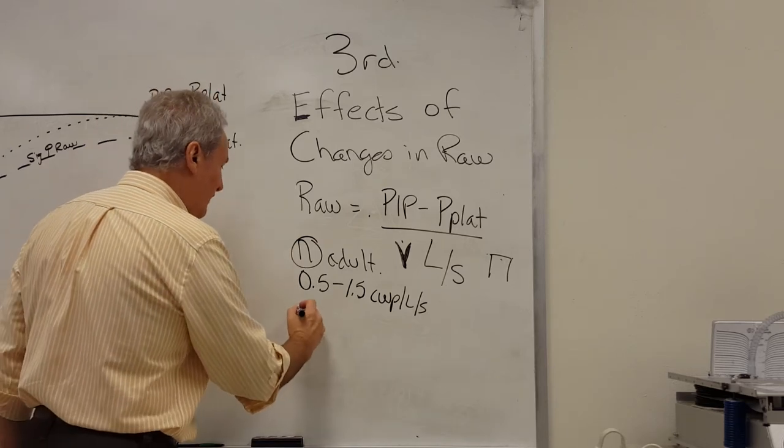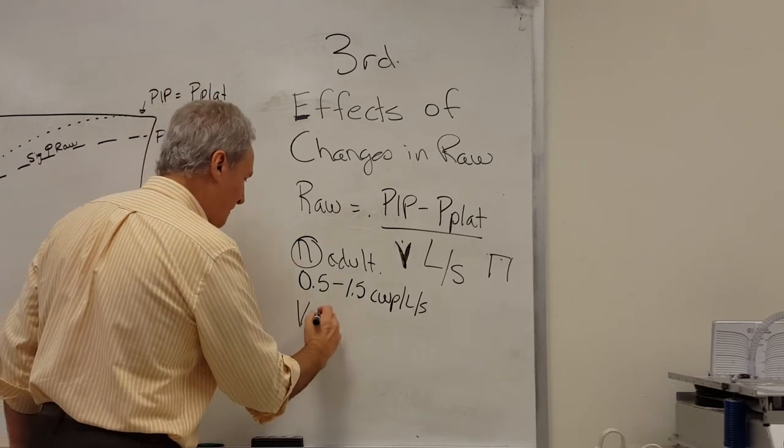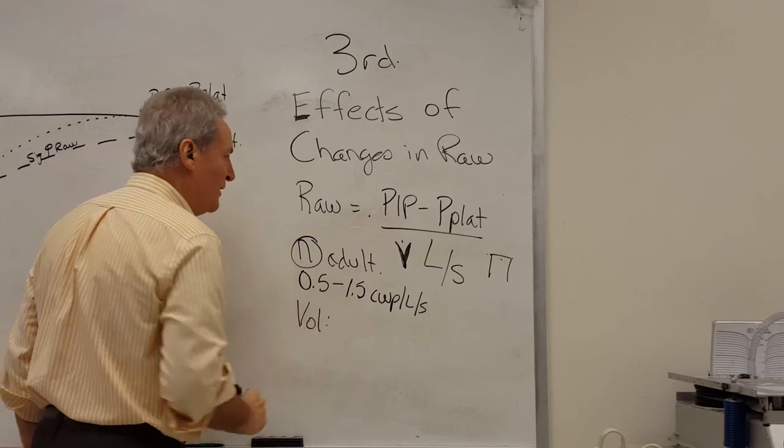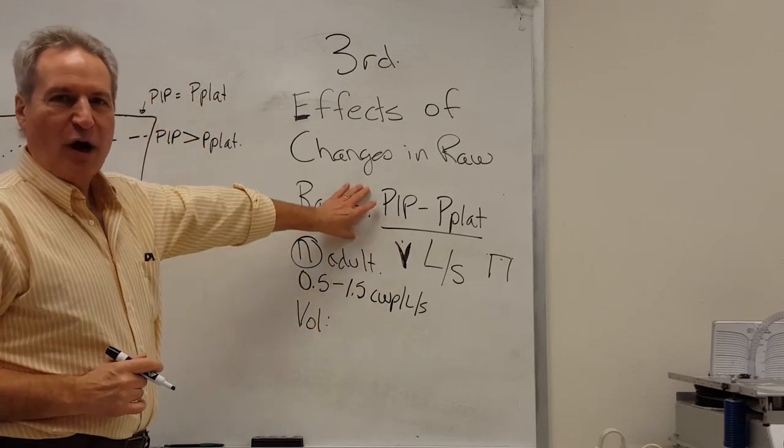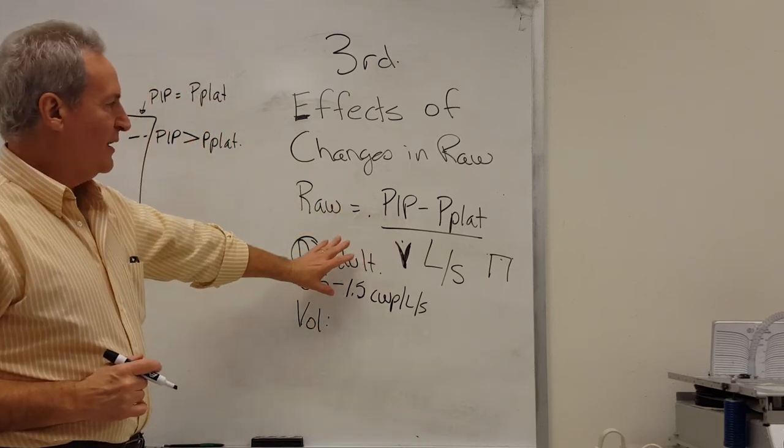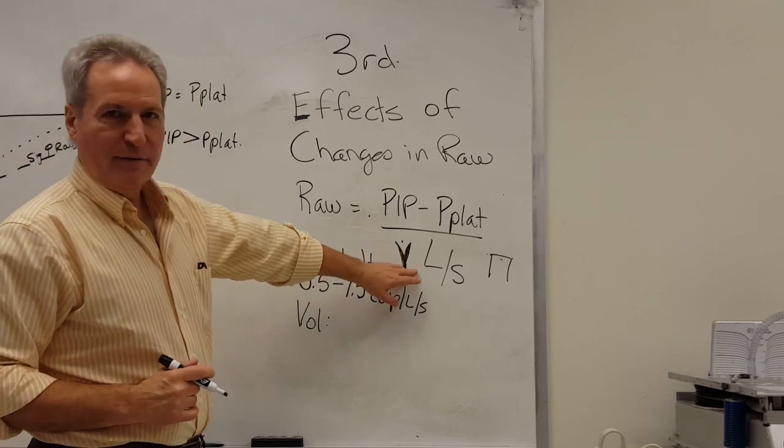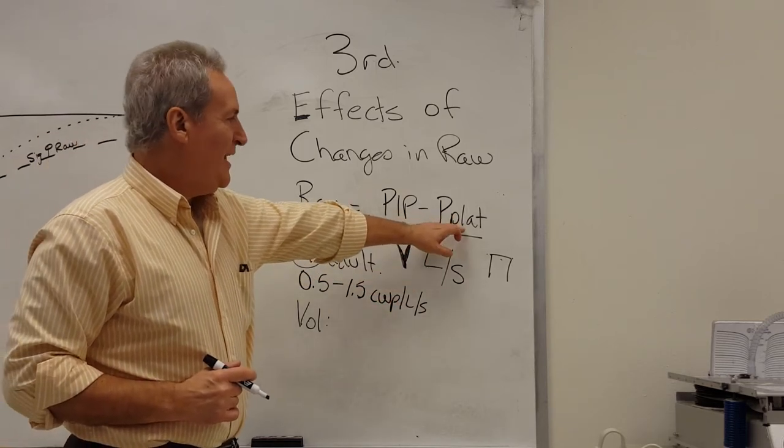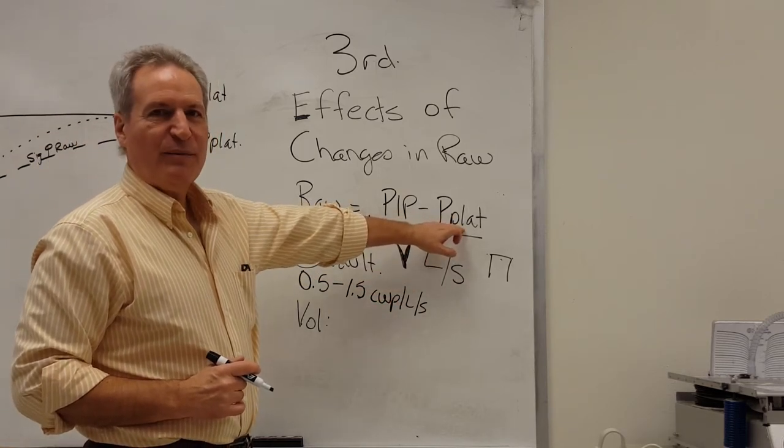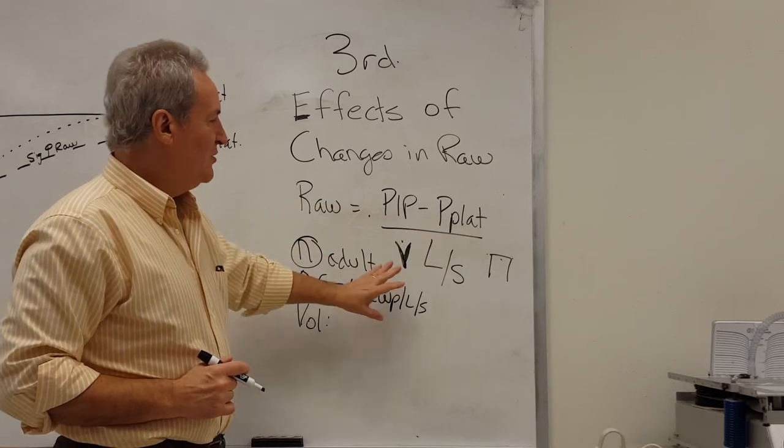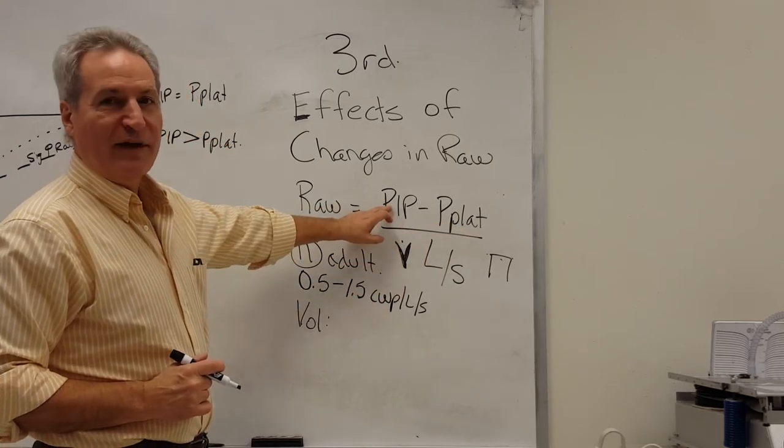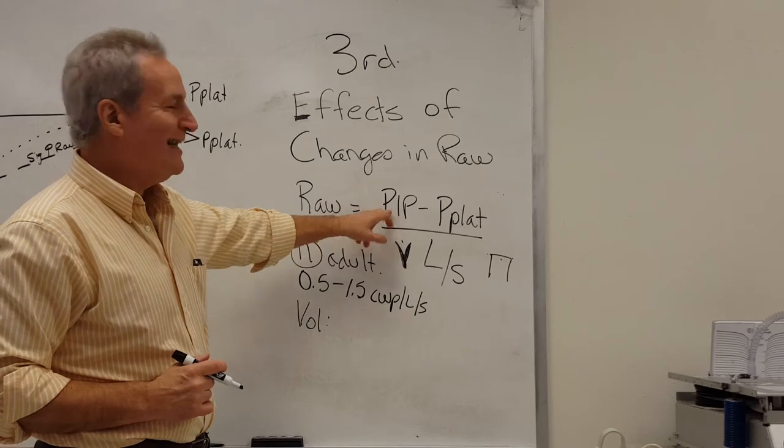First, if we're in volume ventilation and we have an increase in RAW, just think of the formula. We're not changing flow. P-plat is determined by the compliance of the lung. So as RAW goes up, the only thing that's going to be changing here is PIP.